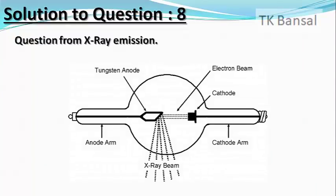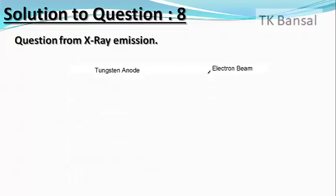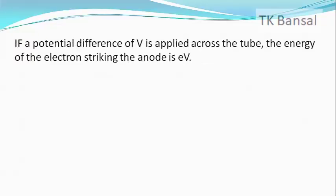The figure shows the schematic diagram of the Coolidge tube used for the production of X-rays. If the potential difference applied across the tube is V, then the energy of the electrons striking the anode is eV. If the entire energy of an electron is utilized to eject one photon, then eV = hν_max = hc/λ_min, or λ_min = hc/(eV).